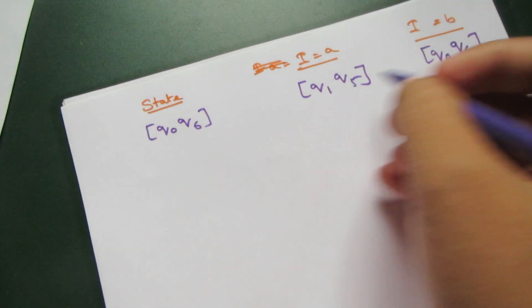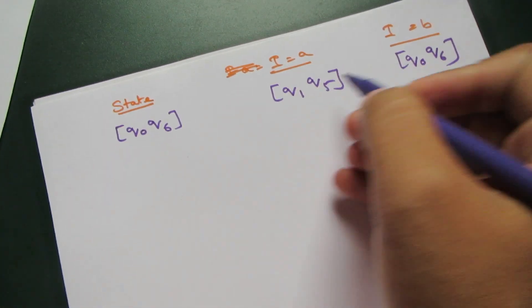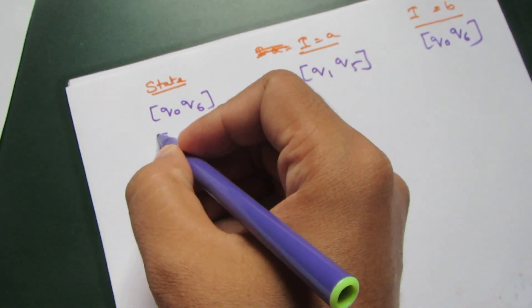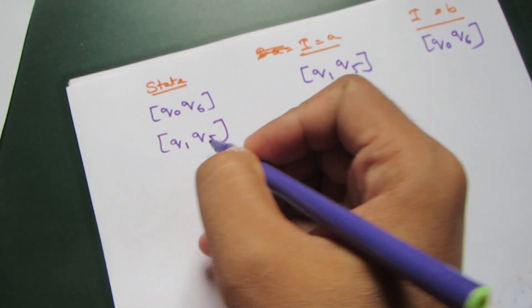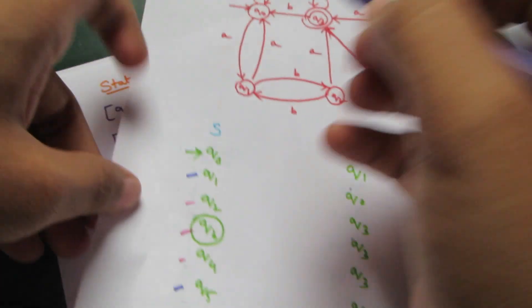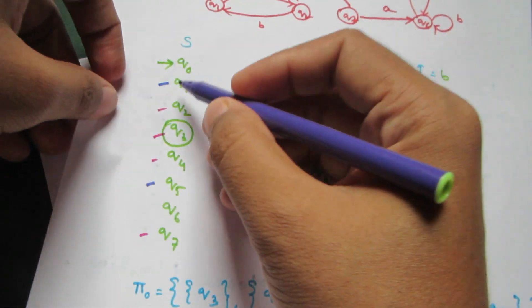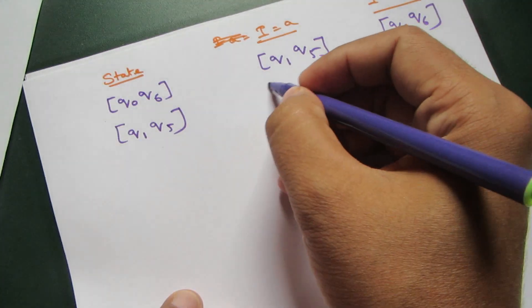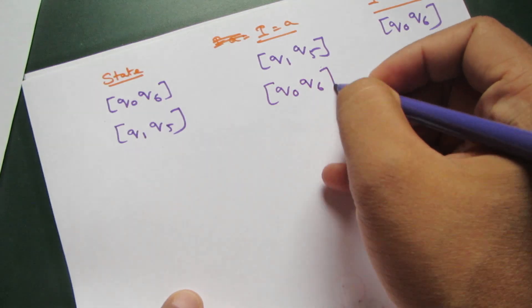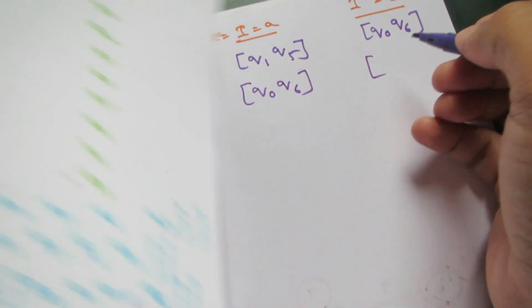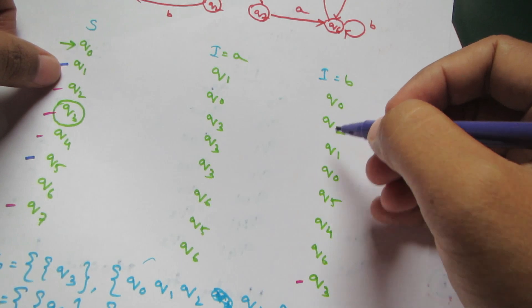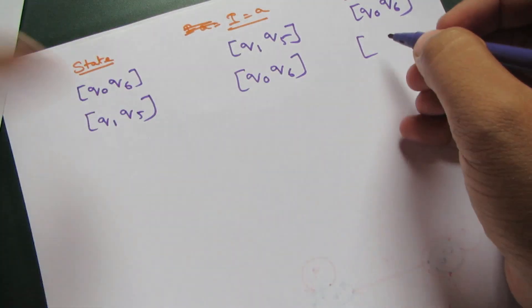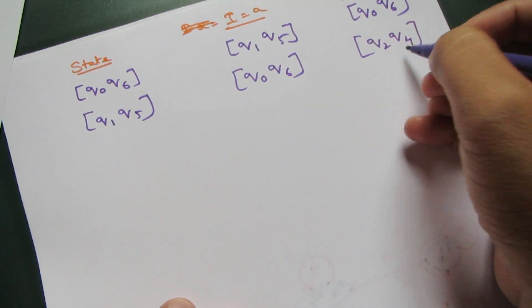This row is done. Now for q1 q5: we write q1 q5. For input a, q1 q5 goes to q0 q6. For input b, it goes to q2 q4.